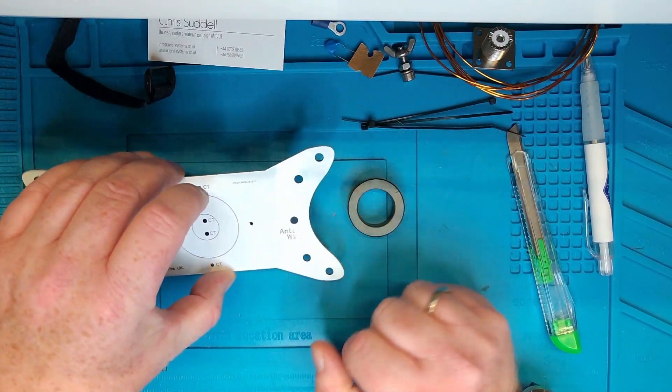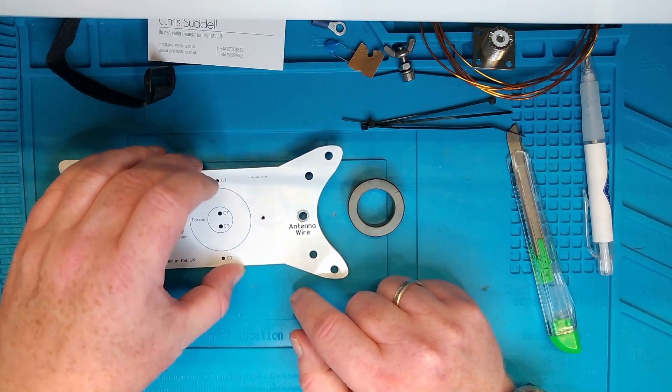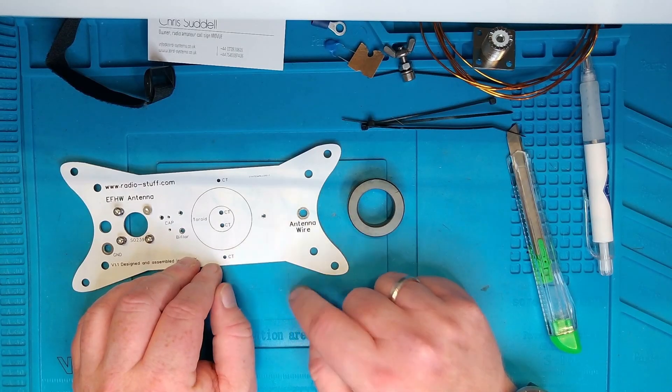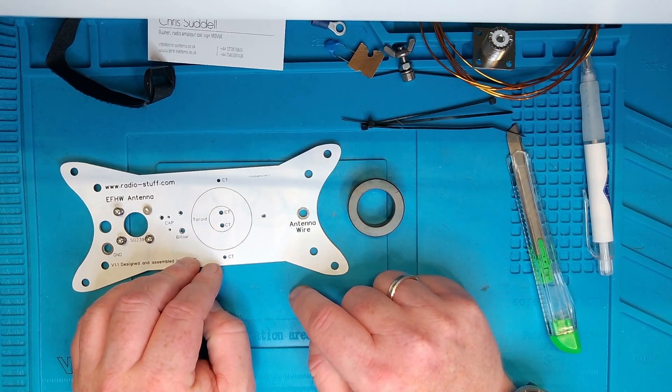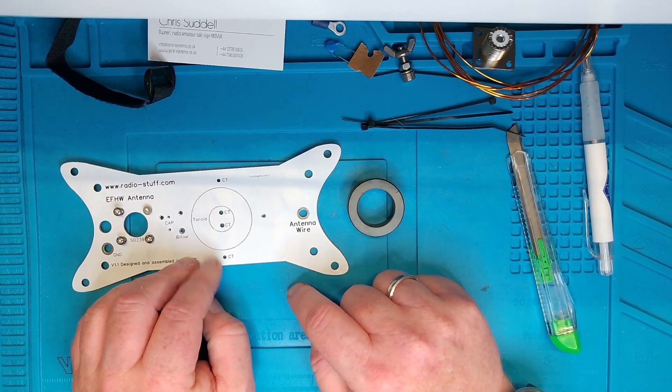So this looks simple enough to build. I guess the biggest challenge here is to wind the toroid. And I am no expert in winding toroids, I've just made a few. So I'm not going to show you the winding, but we're going to get back to building the rest of the antenna after I wind the toroid.